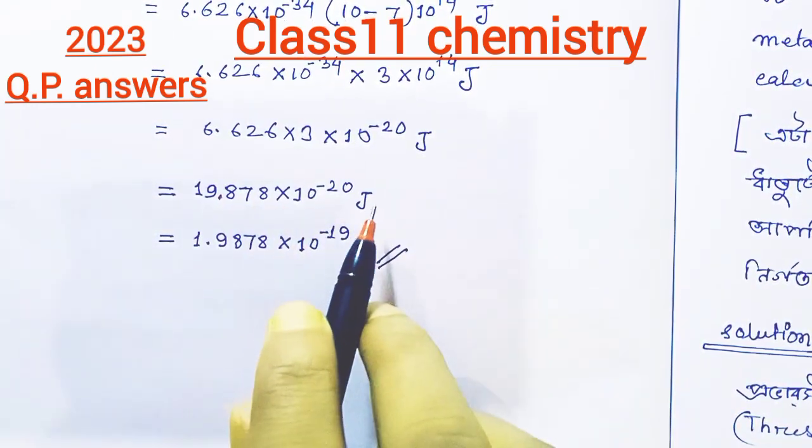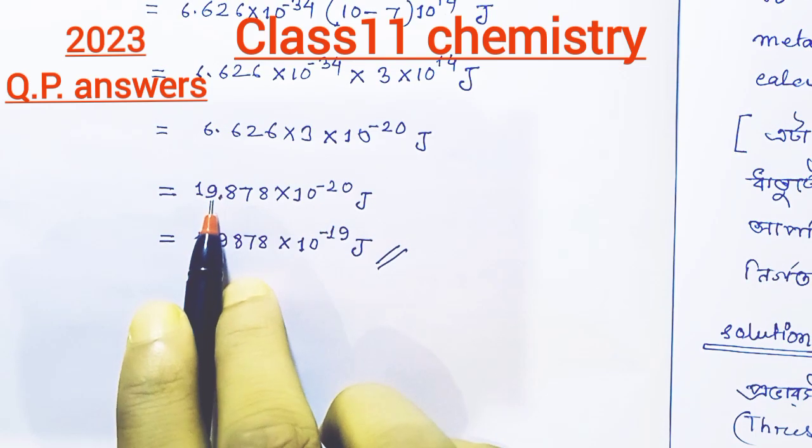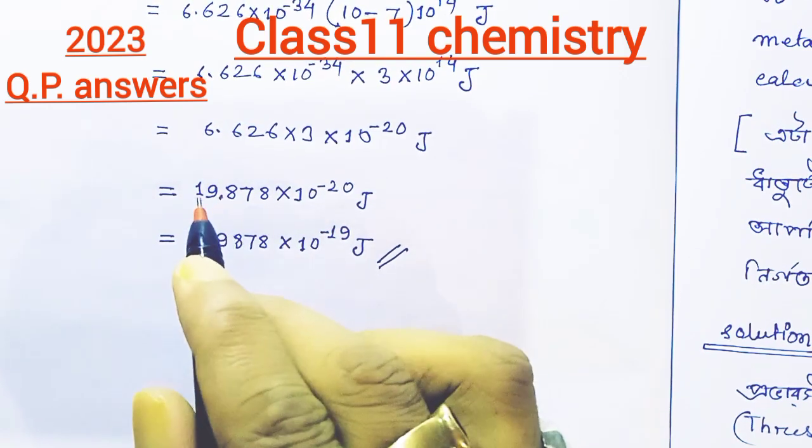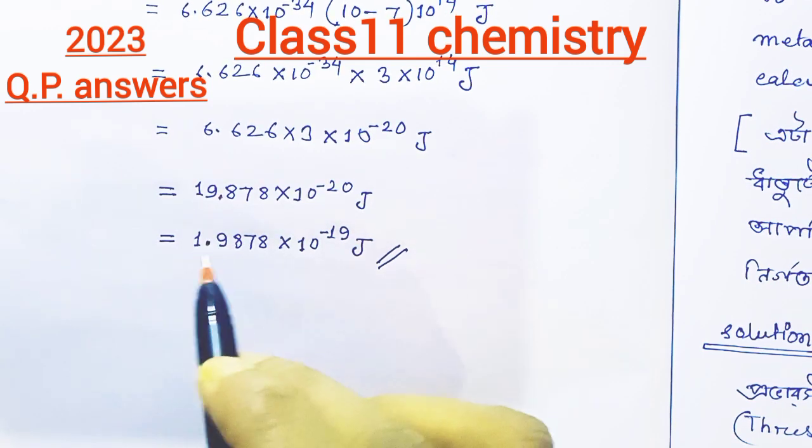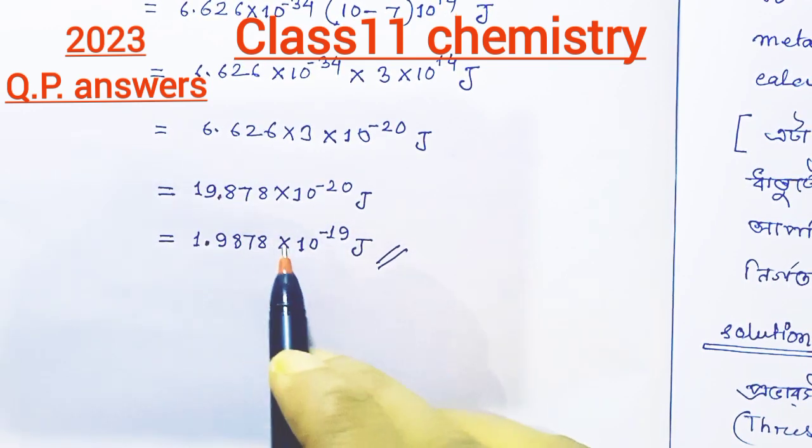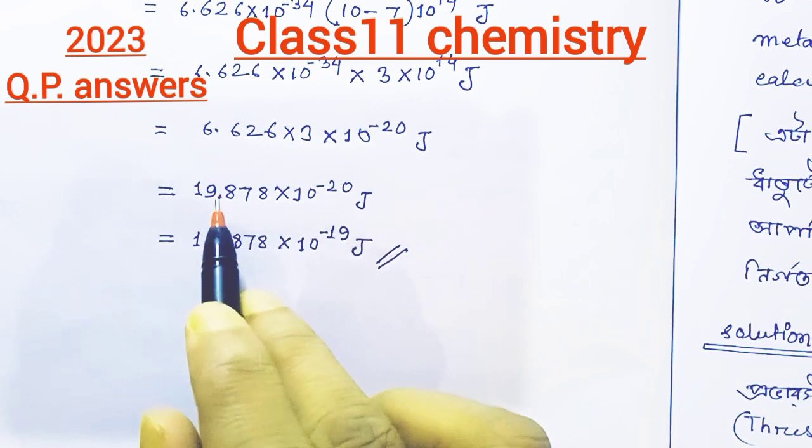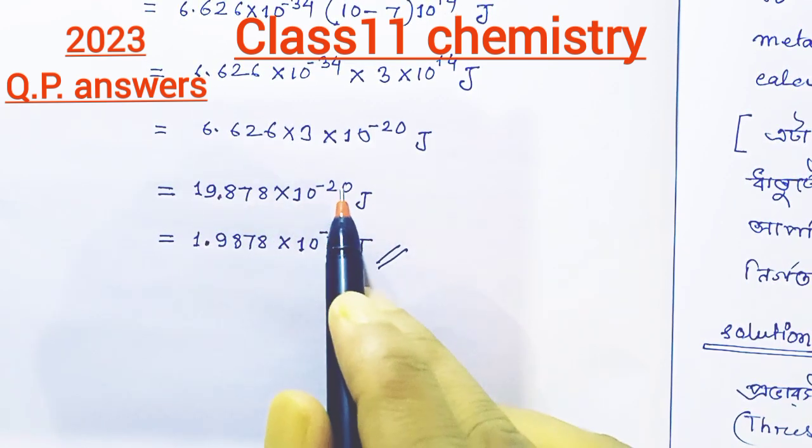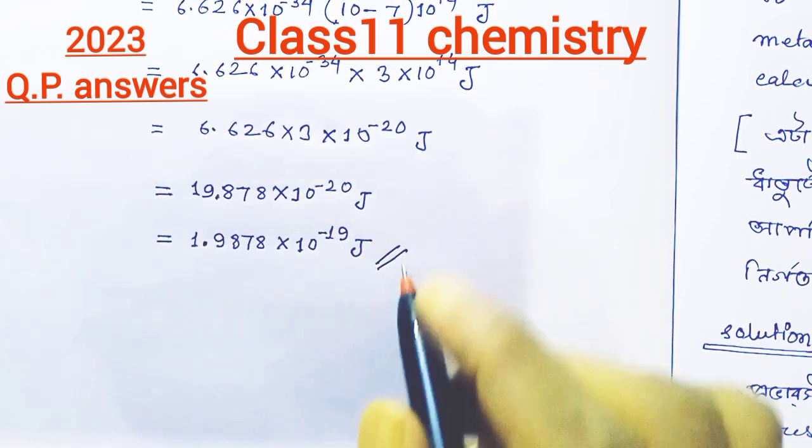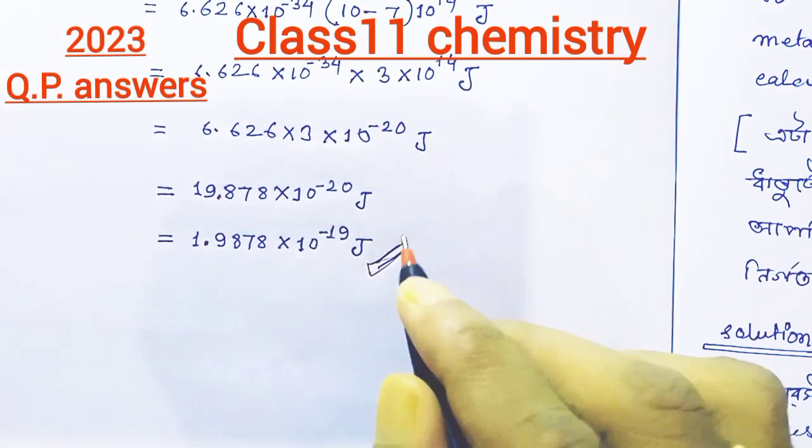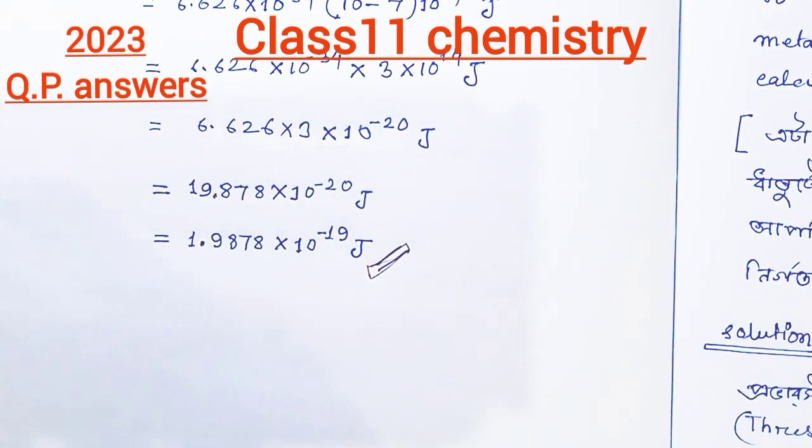We can write in scientific notation. So this means 1.9, we can write 1.9878. We can write the left side, then 10 to the minus 19 J. So we can get the final answer, let's check.